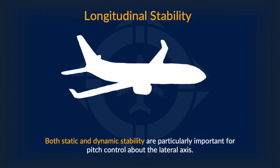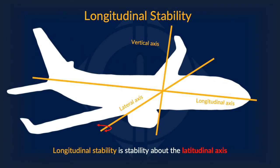Both types of stability are particularly important for pitch control over the lateral axes, which is what we explored with the fluctuations looking at the side view of the airplane. That was longitudinal stability — stability about the lateral axes. Longitudinal stability is stability about the lateral axes.